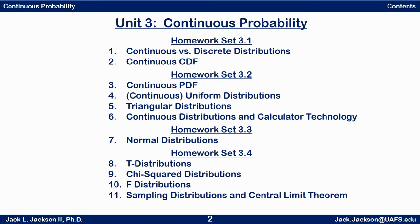Then we get to the big part — the main part of this unit — which is talking about normal distributions, the most important distribution we'll study all semester. In homework set 3.4 we'll look at some other very important distributions: the T, chi-square, and F distributions, and we'll learn how to use calculator shortcuts to do probabilities and inverse probabilities. Normal, T, chi-square, and F distributions, along with the binomial and hypergeometric from the last unit, are the main ones used in inferential statistics.